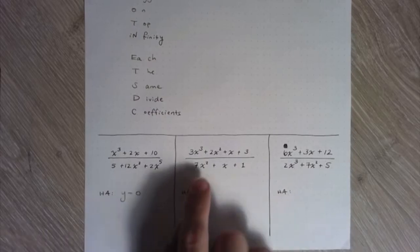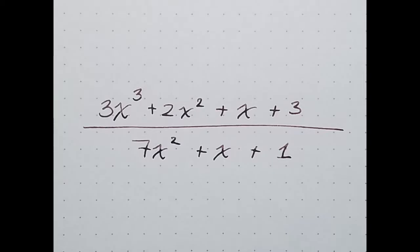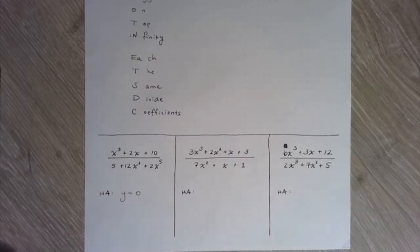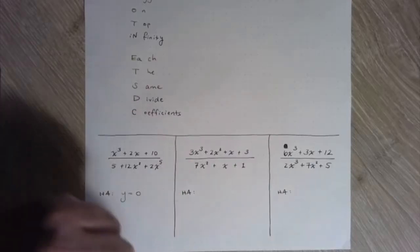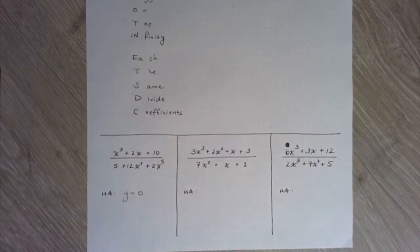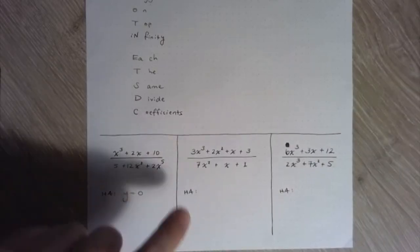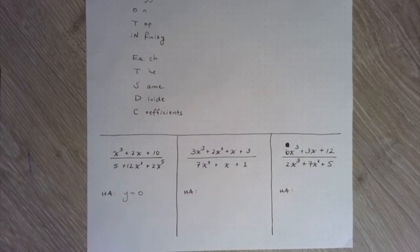For the next function, we have 3x cubed plus 2x squared plus x plus 3 divided by 7x squared plus x plus 1. Again, we look for the largest exponents in the numerator and in the denominator. So in the numerator, my largest exponent is a 3. In the denominator, my largest exponent is a 2.